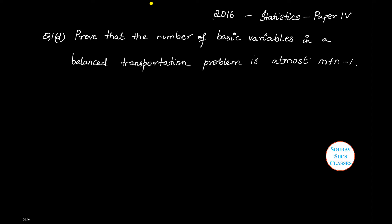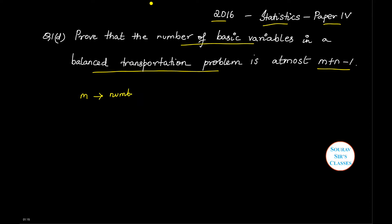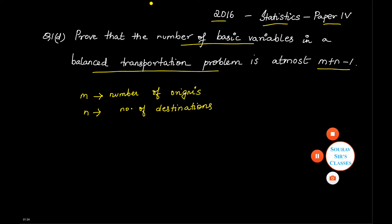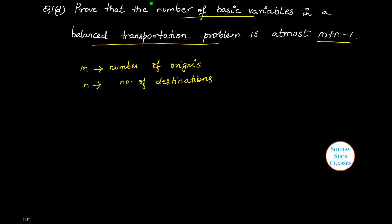The question we will be solving appeared in the 2016 paper of Statistics — that is Paper 4, Question number 1d. The question says: prove that the number of basic variables in a balanced transportation problem is at most m plus n minus 1, where m denotes the number of origins and n denotes the number of destinations.